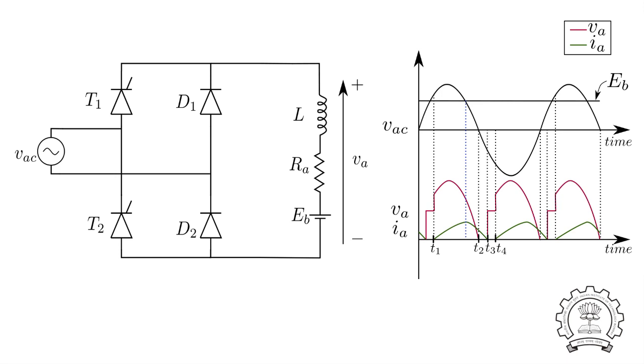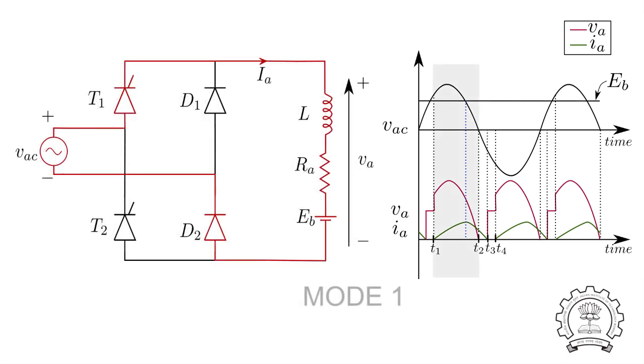Assume that we are applying a gate pulse at time T1. Note that at this instant, the instantaneous value of AC voltage VAC is greater than the back EMF Eb. Current will start to flow from the source to the load through the thyristor T1 and diode D2. The output voltage is VAC at this time.